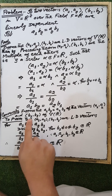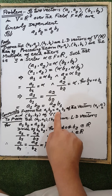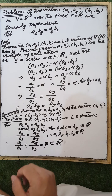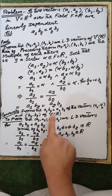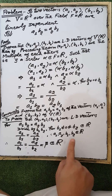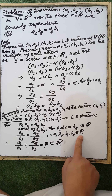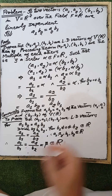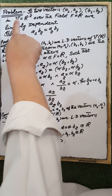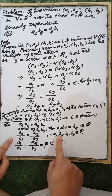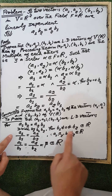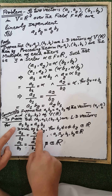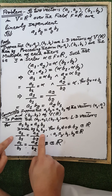Conversely, suppose that a1·b2 = a2·b1. We assume this condition and need to prove that the two vectors with coordinates (a1, a2) and (b1, b2) are linearly dependent vectors of the vector space V over the field R. Suppose that the elements b1 and b2 are nonzero quantities. Then we divide this equality by the product b1·b2.